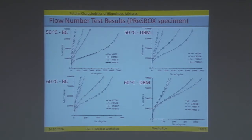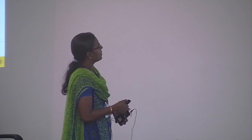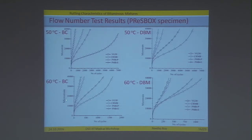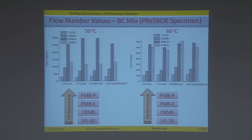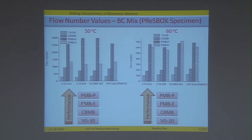Coming to the flow number test results: the flow number is a repeated creep and recovery test with 0.1 second haversine loading and 0.9 second recovery. Four different protocols were used to find the flow number values, and the performance ranking was the same as seen in rut wheel testing or flow time testing — PMB plastomer outperforming every other binder — and the same results were obtained for the DBM mix as well.